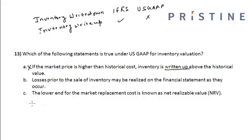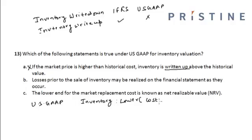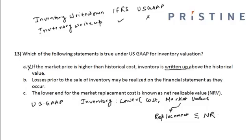As per US GAAP, the inventory value is reported at the lower of cost or market value. This market value is equal to the replacement cost, which has an upper bound of net realizable value and a lower bound of net realizable value minus the normal profit margin.